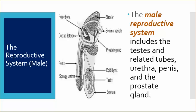The male reproductive system includes the testes and related tubes, urethra, penis, and the prostate gland.